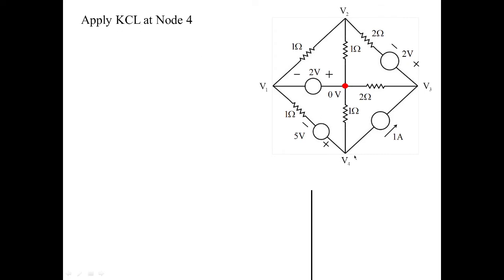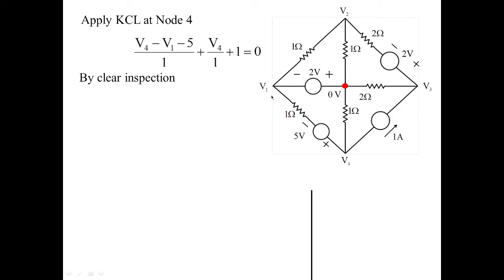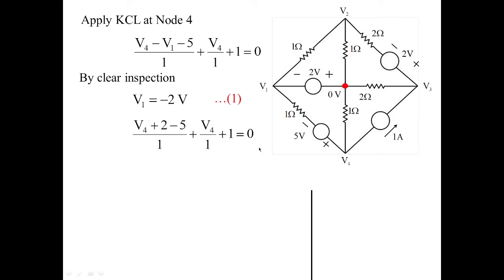Applying KCL at node 4 as the dominating node: (V4 − V1 − 5) / 1. By inspection, V1 = minus 2 volts. Substituting: (V4 + 2 − 5) / 1 + V4 / 1 + 1 = 0. This gives V4 = 1 volt (equation 2).